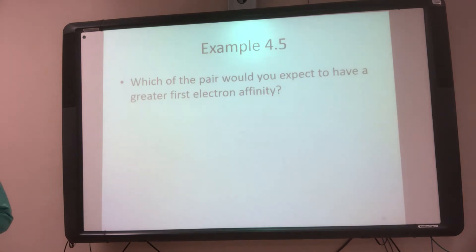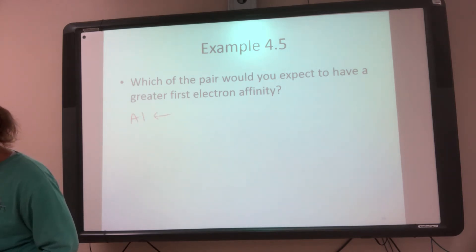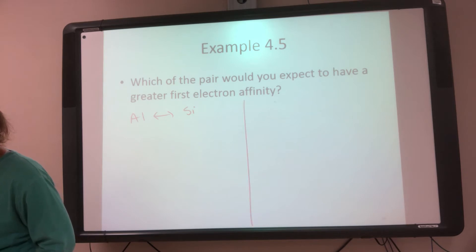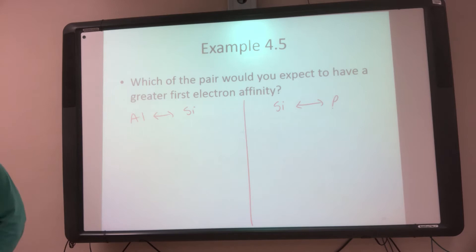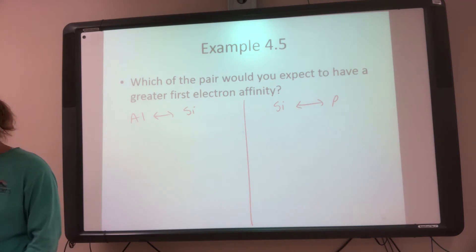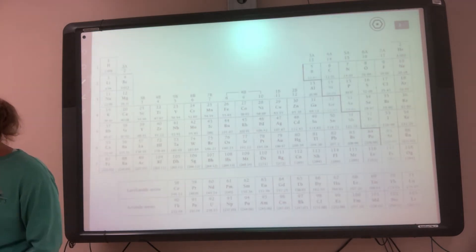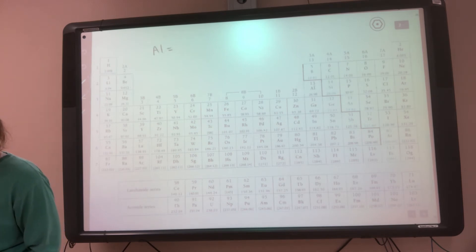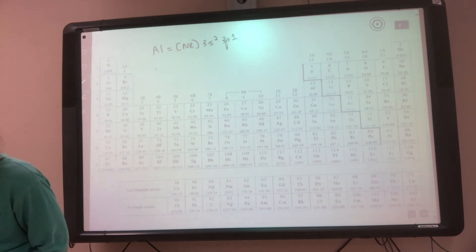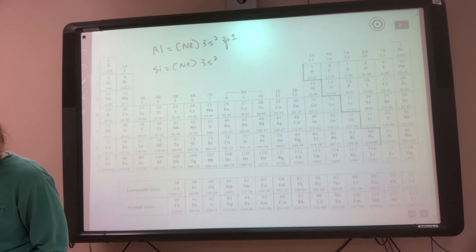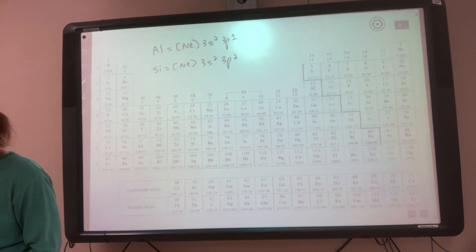So let's look at a problem. For each of these pairs I want you to know who's going to have a greater first electron affinity. The first pair is aluminum versus silicon, and then silicon versus phosphorus. To figure this out I have to draw my orbital diagrams and do my electron configurations. Aluminum: noble gas is neon, so [Ne] 3s² 3p¹. Silicon right next to him: [Ne] 3s² 3p².